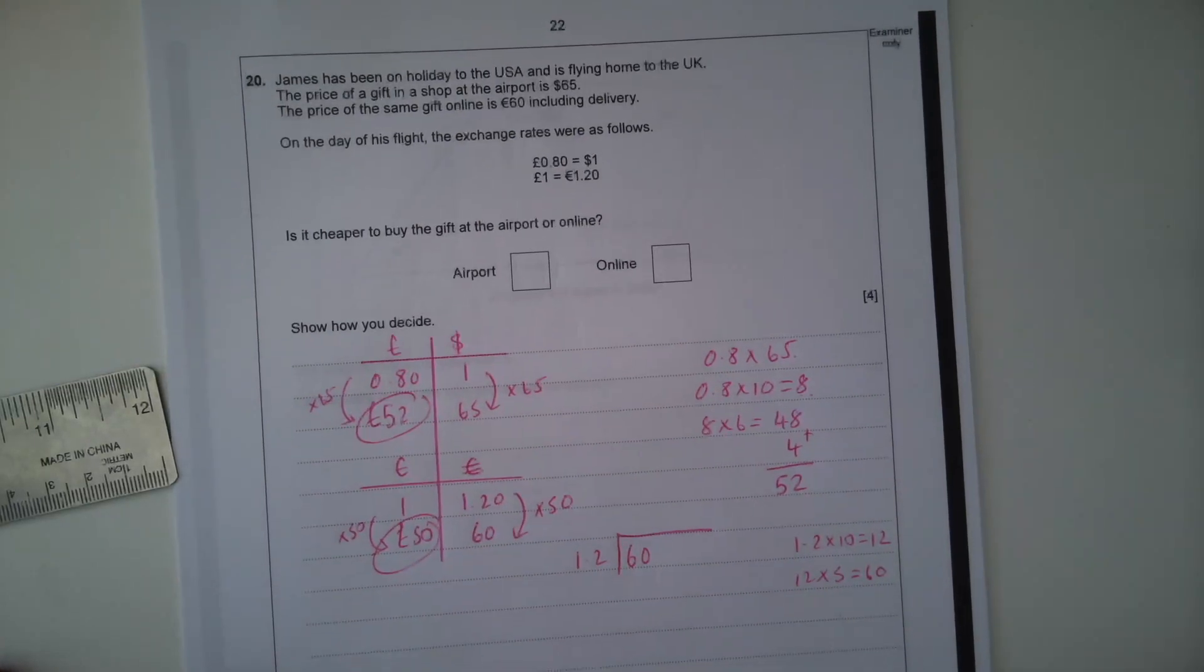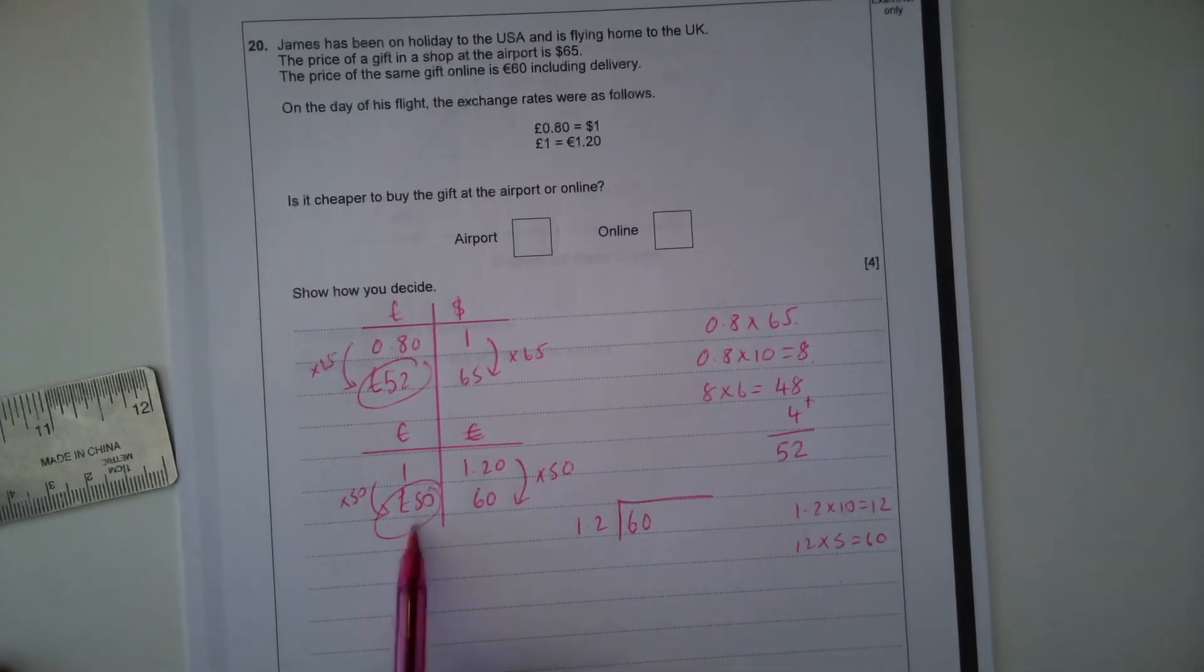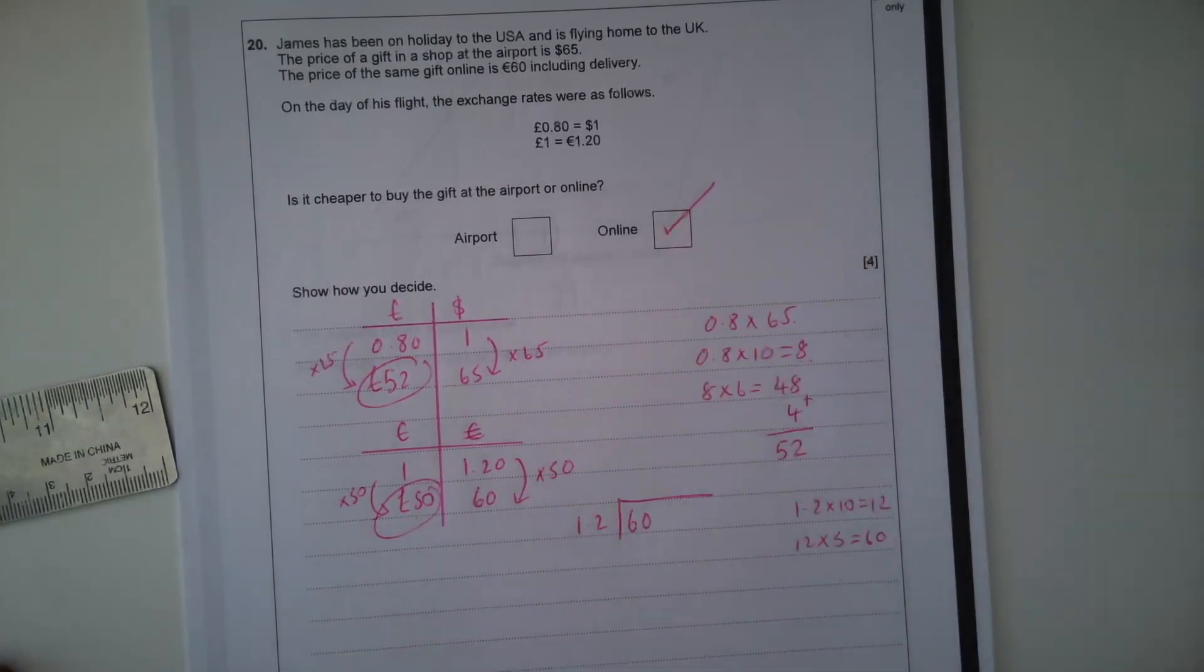So that's times by 50. So when we times this by 50, we get £50. £52 compared to £50, well it would be cheaper to buy it online at £50.